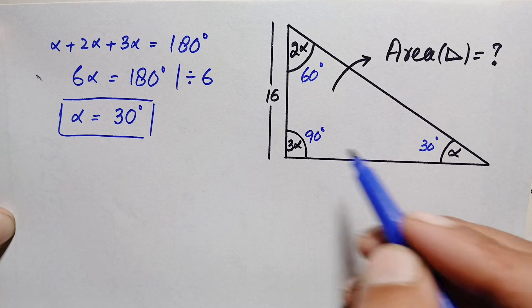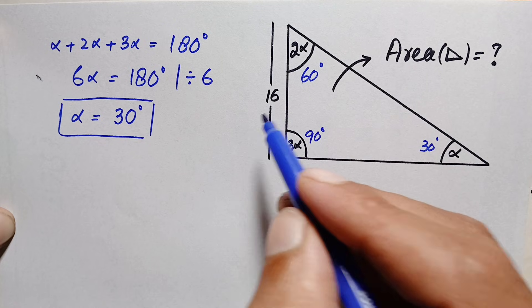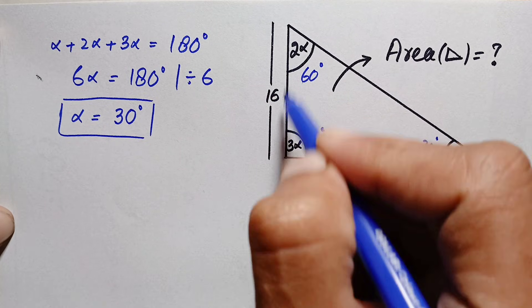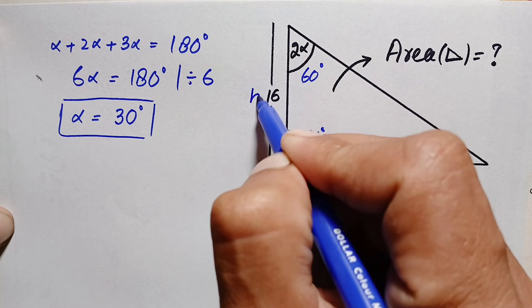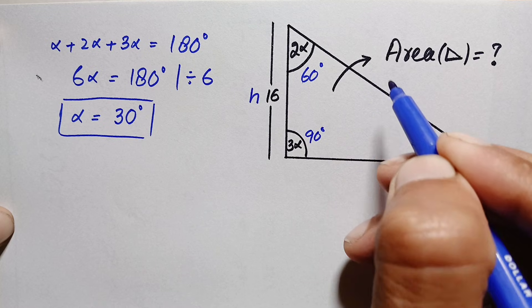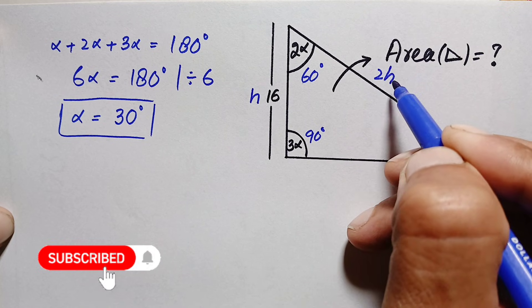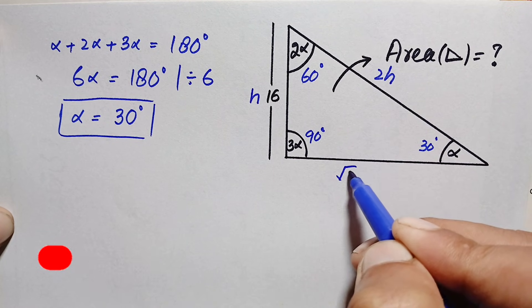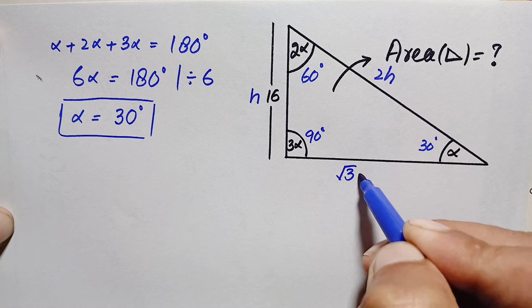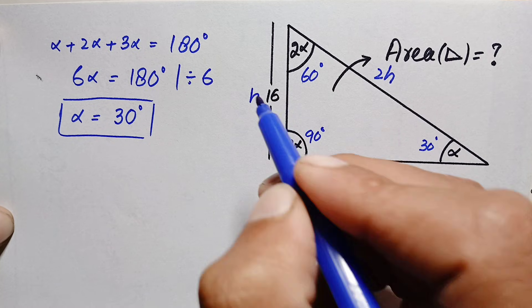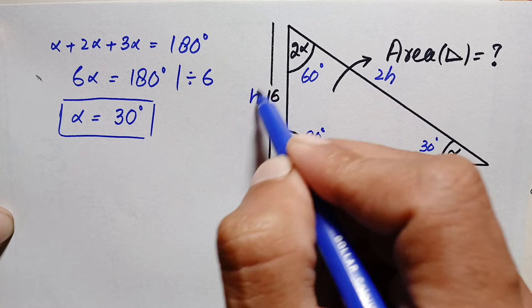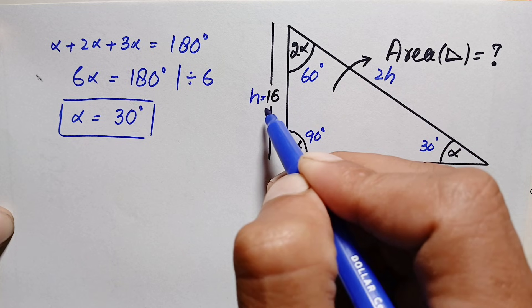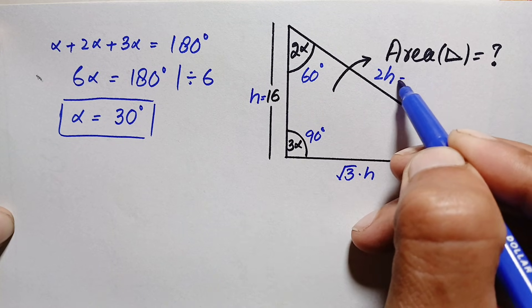A 30-60-90 triangle has special side length ratios. If the shortest side is h, then the hypotenuse is 2h, and the remaining side is √3 times h. The given height is 16 units, so h = 16.